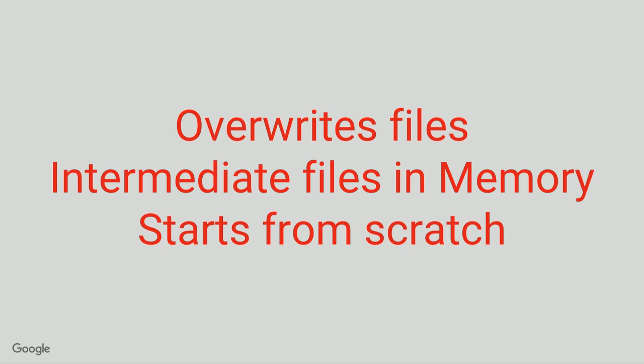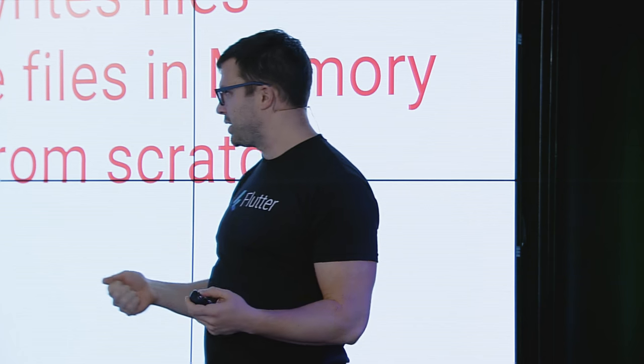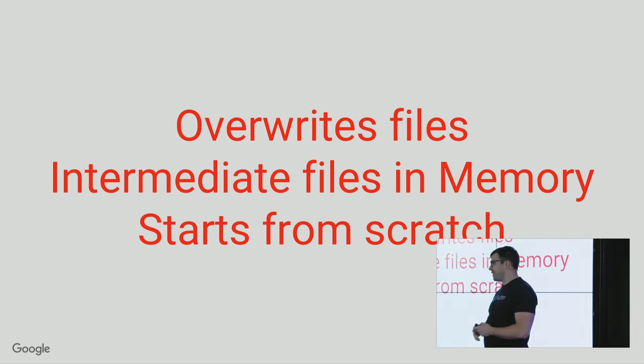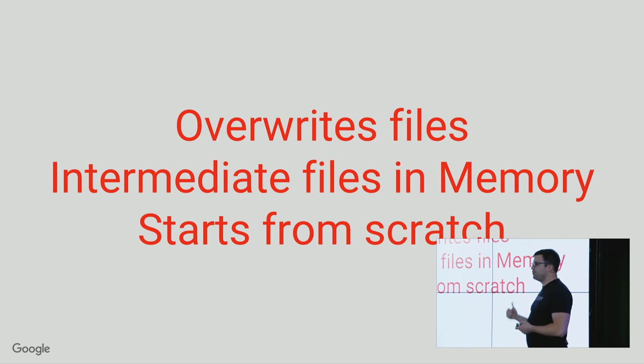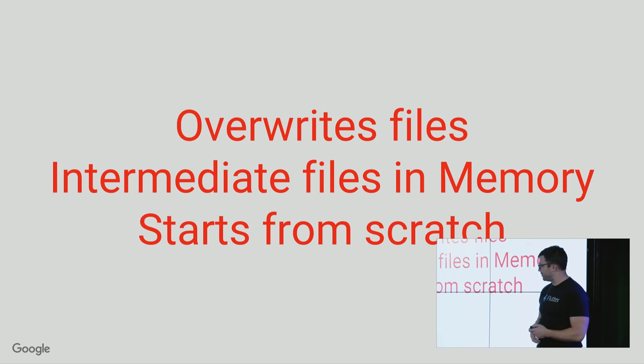If you look at what we do with barback with transformers, it lets you overwrite files, which seems nice, but actually ends up being really bad. Because then if you look at things like source maps and stack traces, does the stack trace point to the generated file or the original file? It's not clear. If you're doing pub serve, all the intermediate files are in memory, so there's no place to look at the source map and the stack trace. And obviously, if you do a pub build, those files aren't even on disk. Every time you build, you start from scratch, and that can take a long time. We've had people internally take many, many minutes — it's a very long coffee break for a full build from scratch.